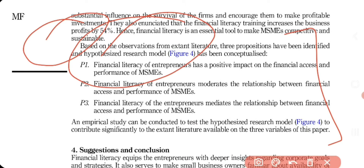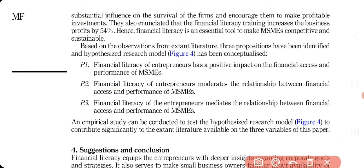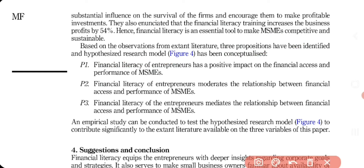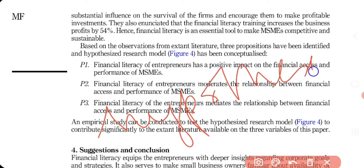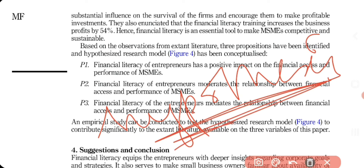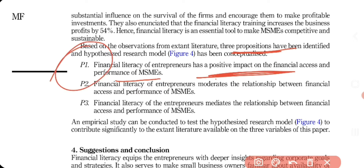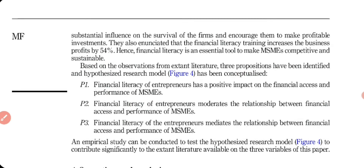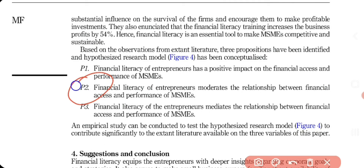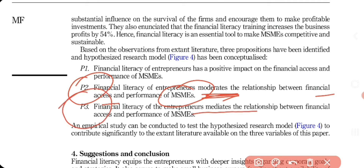Based on all the reviewed literature, I made propositions using a hypothesized research model. A hypothesis is something tested in a paper, whereas a proposition is an assumption that can be empirically tested by others in future research. The first proposition is that financial literacy of entrepreneurs moderates the relationship between financial expertise and performance of MSMEs.